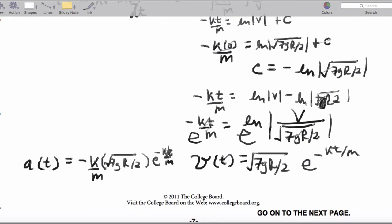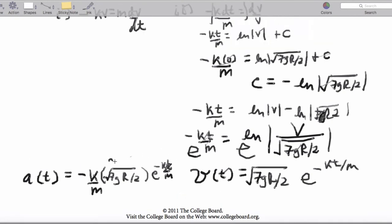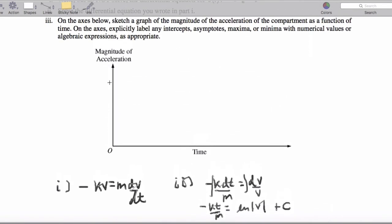And, we'll graph that. So, I suppose we can call this V naught. And then, if we want to graph the magnitude of the acceleration with respect to time, this is going to be V naught K over M. And then, it's just going to be this exponentially decaying function that goes to 0.